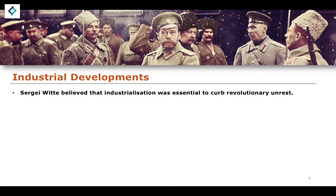We can see pointers towards what industrialization does for an economy in those Western states, and so Sergei Witte believed firstly that industrialization would bring net economic benefits to Russia, but also that it would be essential in curbing and reducing revolutionary unrest. If the economy was developing, if people were given workers' rights and jobs, and there was less poverty around, this would lead to less resentment of the state and government.